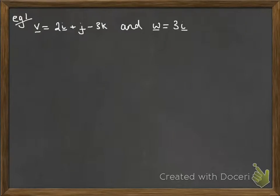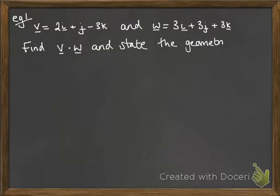So here's our example. We've got these two vectors. We're going to find the scalar product and state the geometrical relationship between them.